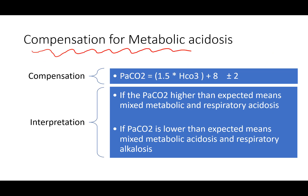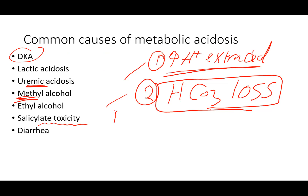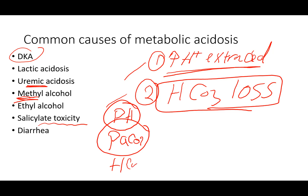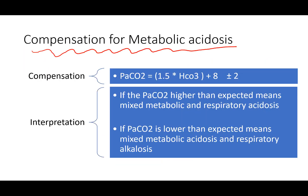To calculate compensation for metabolic acidosis: in any blood gas, first look at the pH, then the CO2, then the bicarb. If the pH is low, it means acidosis. If the CO2 is low, it cannot explain the acidosis, so look at the bicarb. When the bicarb is low, it is a metabolic acidosis — this is the primary abnormality.